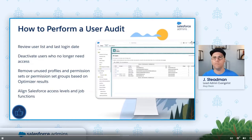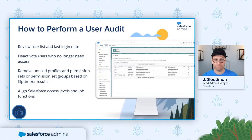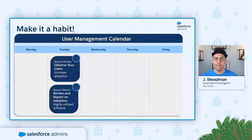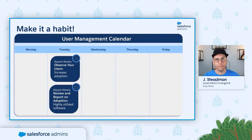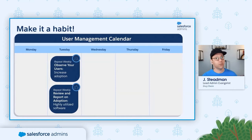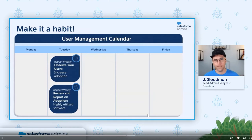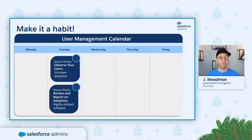We'll talk about this in more detail in the Essential Habits Securities session. To get started reviewing adoption, we recommend scheduling 60 minutes each week. Try to schedule this on the same day and time each week if you can. If 60 minutes is too much or too little for you, please feel free to adjust as needed.